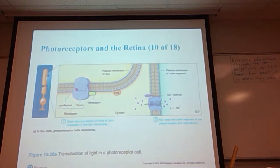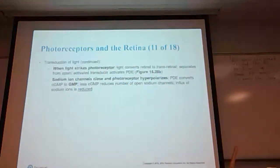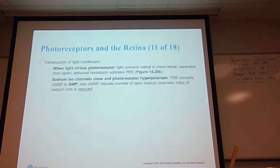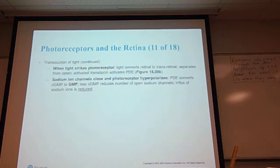In the dark, rhodopsin and cis-retinol combine; transducin and the PDE cause channels to open allowing ions to cross the membrane. When light strikes a photoreceptor, light converts the retinol into trans-retinol, which separates from opsin and activates transducin, which in turn activates the PDE. Those sodium channels then close. The photoreceptor will hyperpolarize, and PDE converts cGMP to simply GMP. The reduced amount of cGMP reduces the number of open sodium channels and the influx of sodium is reduced.